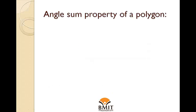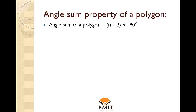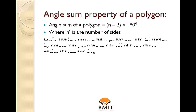Angle Sum Property of a Polygon: The angle sum of a polygon is equal to (n − 2) × 180 degrees, where n is the number of sides.